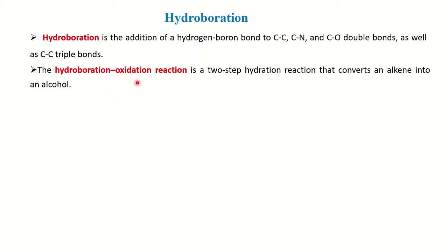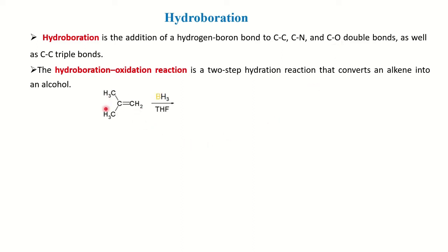We will look at hydroboration followed by oxidation, which is a two-step reaction that converts an alkene into an alcohol. Whenever you have these two reagents together — hydroboration followed by oxidation in the presence of hydrogen peroxide — your unsaturated alkene will convert into an alcohol. We will also see what happens with alkynes and carbonyl compounds.